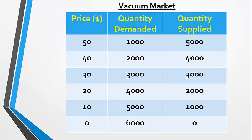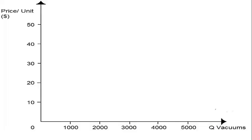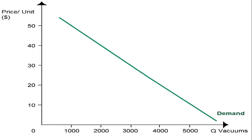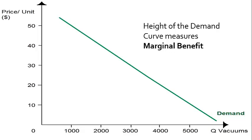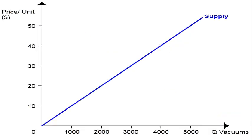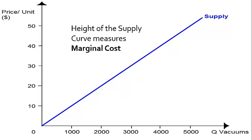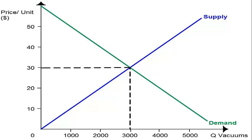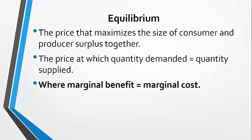Let's draw a supply and demand graph using our data, with price on the y-axis and quantity on the x, which is how we do it in economics. Here's the demand curve — the height of the demand curve measures the marginal benefit, the most a consumer is willing to pay for the first, second, one-hundredth, five-thousandth vacuum, and so on. Here's supply — the height of the supply curve measures the marginal cost of producing each additional vacuum. You can see there is a point where they cross, and that's where supply equals demand — that's equilibrium. Because of what the curves measure, equilibrium is also where marginal benefit equals marginal cost — that's another definition of equilibrium.